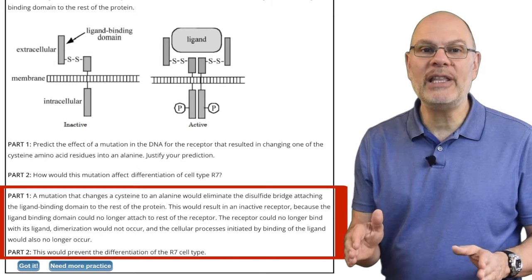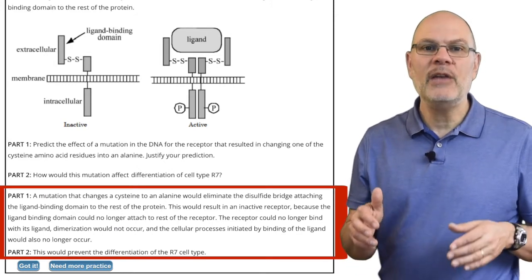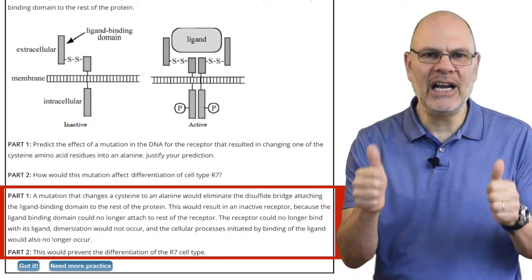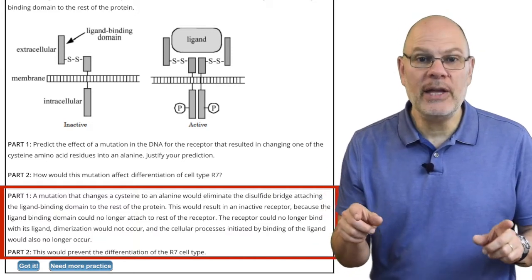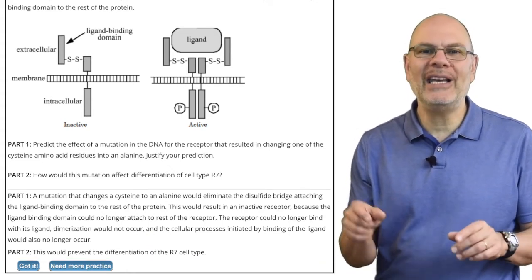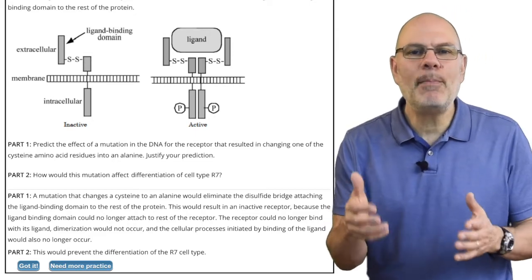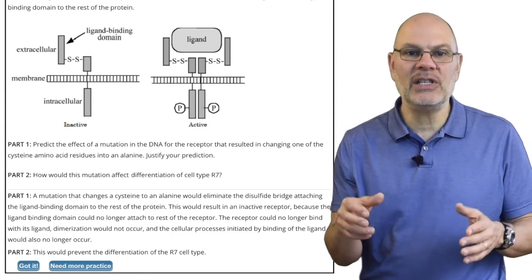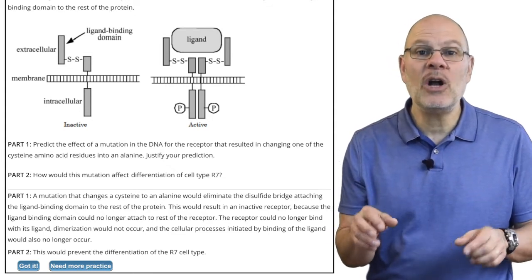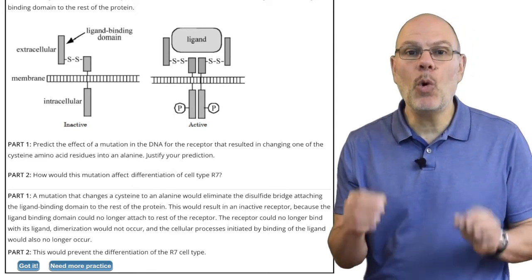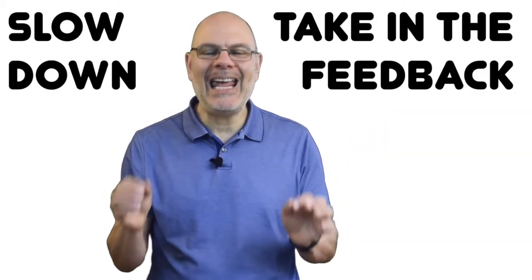Now slowly read the answer and compare it to what you wrote. If you got it right — really right — then pat yourself on the back and click 'got it.' But if you didn't, then reread the answer and think it through. When you're done thinking it through, click 'need more practice.' The way that button works is that it tells Biomania to give you that question again later in the study session. When you see it again, write it out as if you're seeing it for the first time and see if you can come up with a more complete answer. Slow down and take in the feedback.